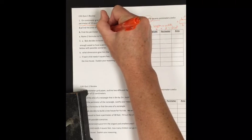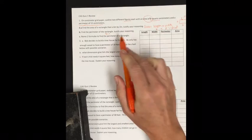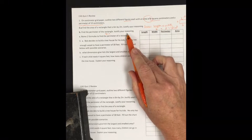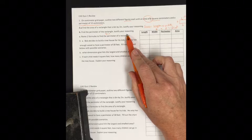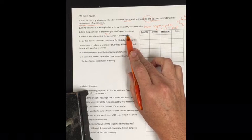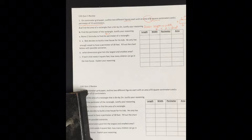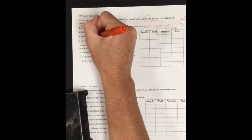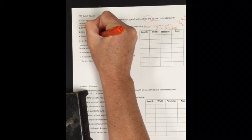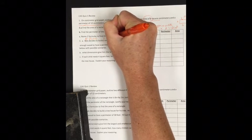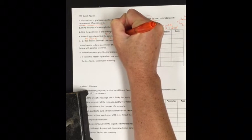So 16 inches. To justify my reason, I could show my picture and say perimeter equals 2 lengths plus 2 widths. So 2 sixes plus 2 twos equals 16 inches. Name two formulas to find the perimeter of a rectangle: perimeter equals 2 times length plus width, or perimeter equals 2 lengths plus 2 widths.